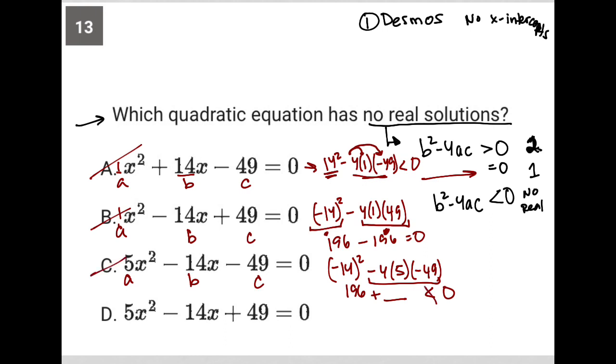So D must be the correct answer, where, again, A is 5, B is negative 14, but this time C is positive 49. So negative 14 squared, minus 4 times A times C. And we know that that is a positive 196.